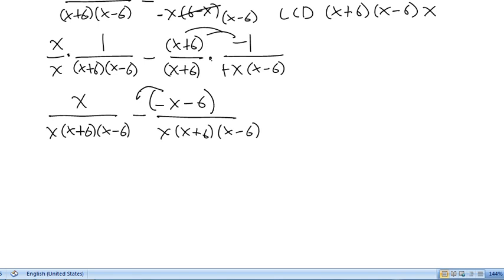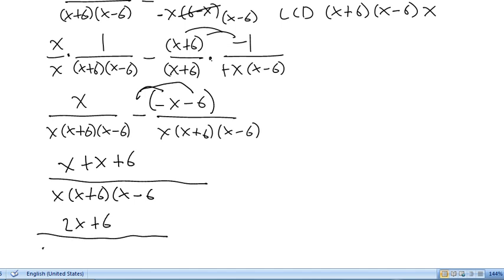Now we're going to need to multiply this negative through the brackets. So, we'll end up with x plus x plus 6. Remembering that x can't equal negative 6, 0, or 6.